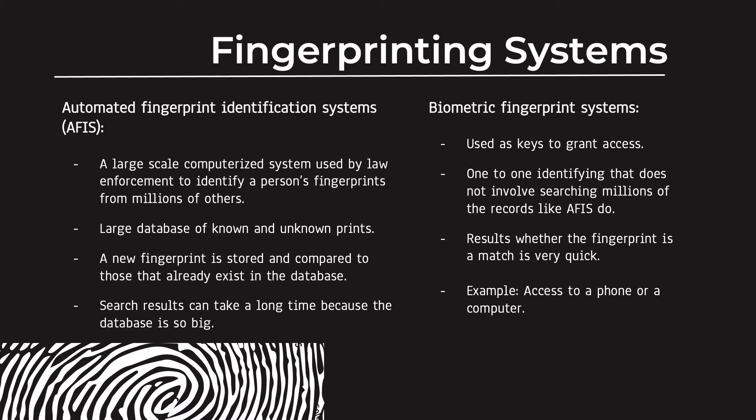There are two types of fingerprinting systems. The first is AFIS, and the other is biometric. AFIS is a large-scale computerized system used by law enforcement to identify a person's fingerprints from millions of others. It could potentially take a long time — even hours — just to find a single person's fingerprint in the huge database. The biggest database with the most people is the FBI's, with over 40 million.